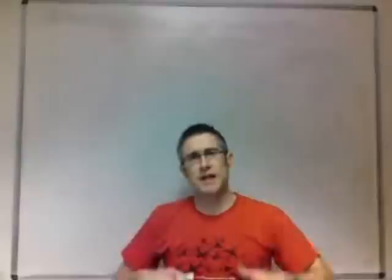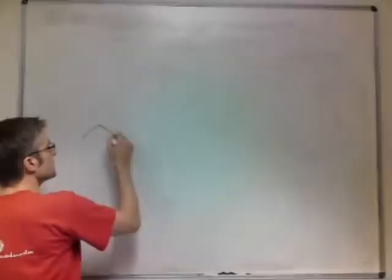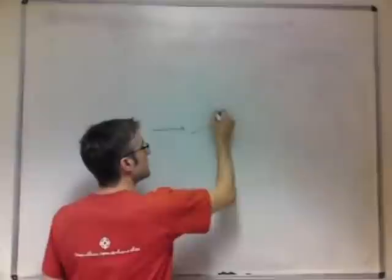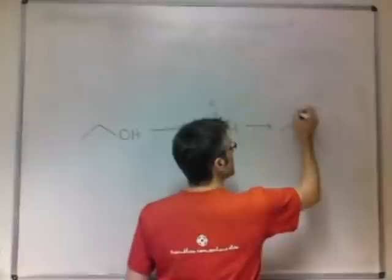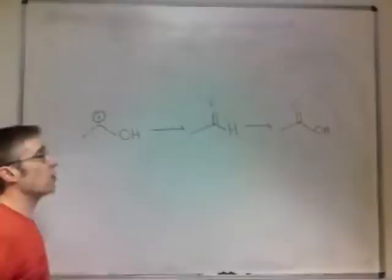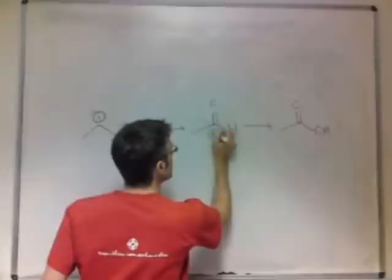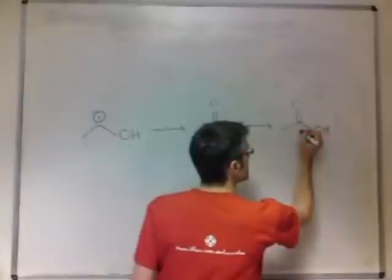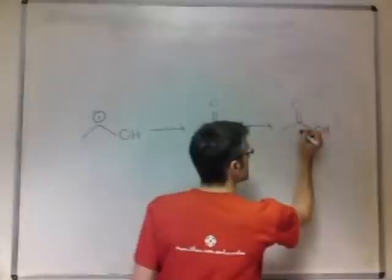Now we're going to think about what happens to that alcohol in the champagne once you've drunk it. Ethanol is metabolized by enzymes in your body to ethanal, and that ethanal is then further metabolized to ethanoic acid. What you should notice about these structures is that ethanol has this carbon in oxidation number one, ethanal with two bonds to oxygen is oxidation number two, and ethanoic acid with three bonds to hetero atoms is oxidation number three. This process as we go across here is one of oxidation.